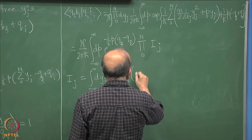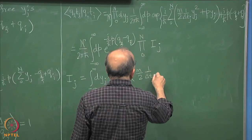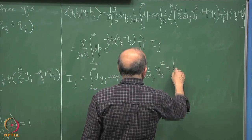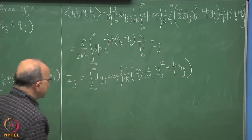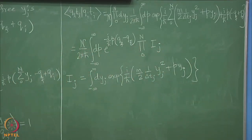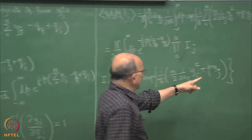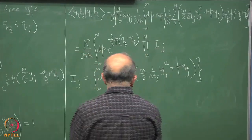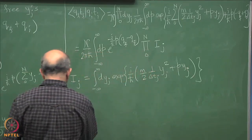So I_j equals integral dy_j times e raised to (i/ħ) times (m/2) times (1/δt_j) times y_j squared plus p·y_j. Now this we do by completing the square and converting it into a Gaussian — there is a y_j squared and there is a y_j term.